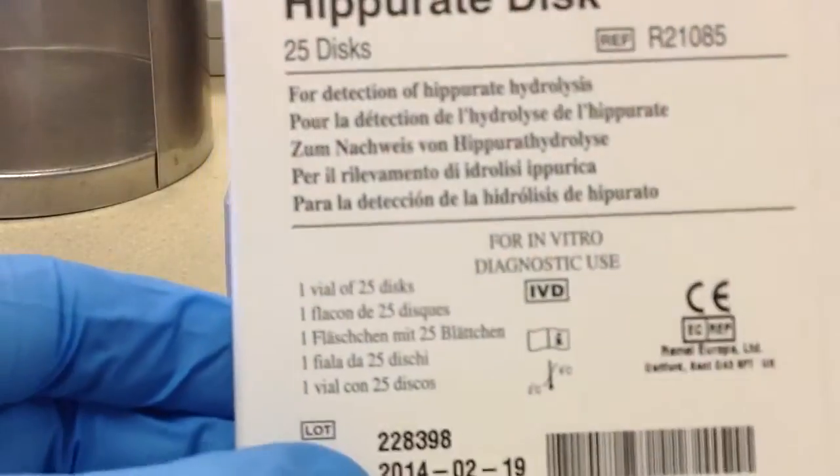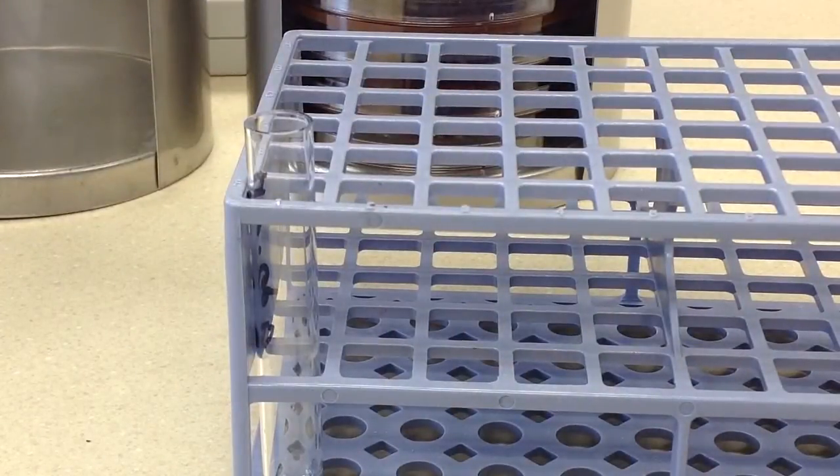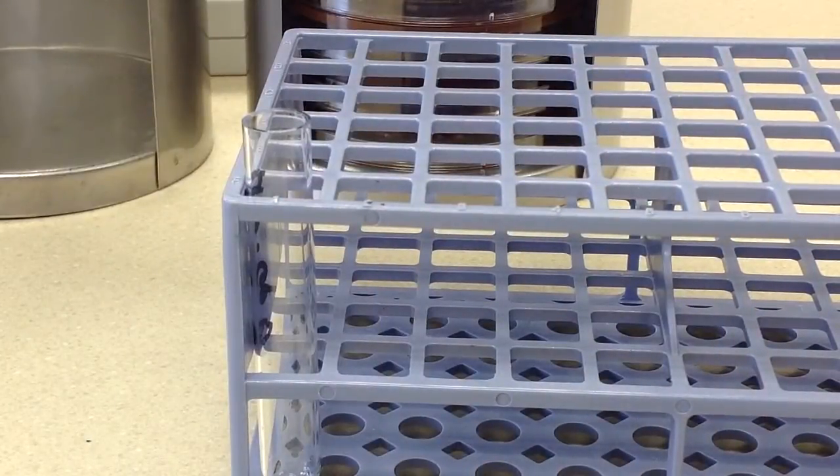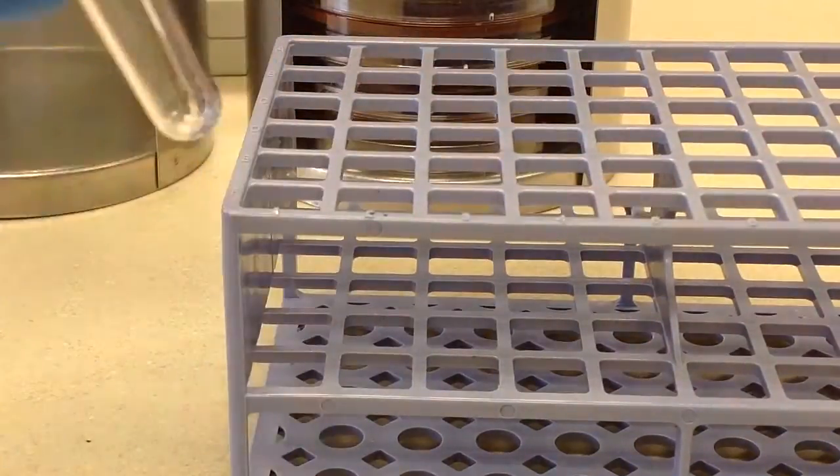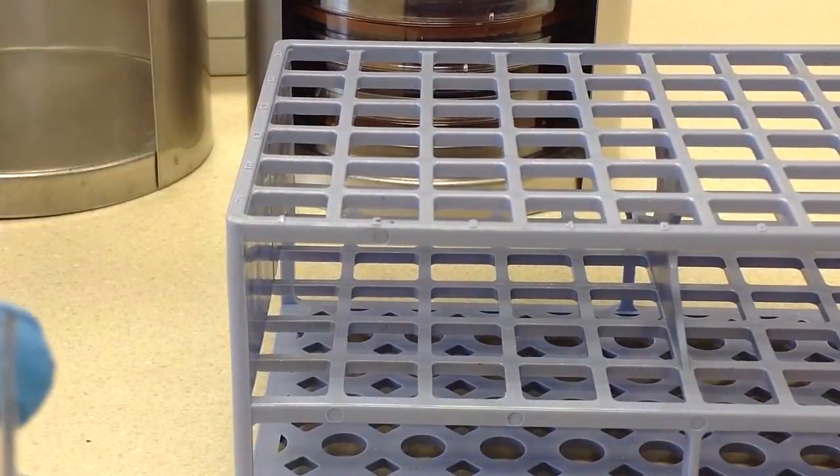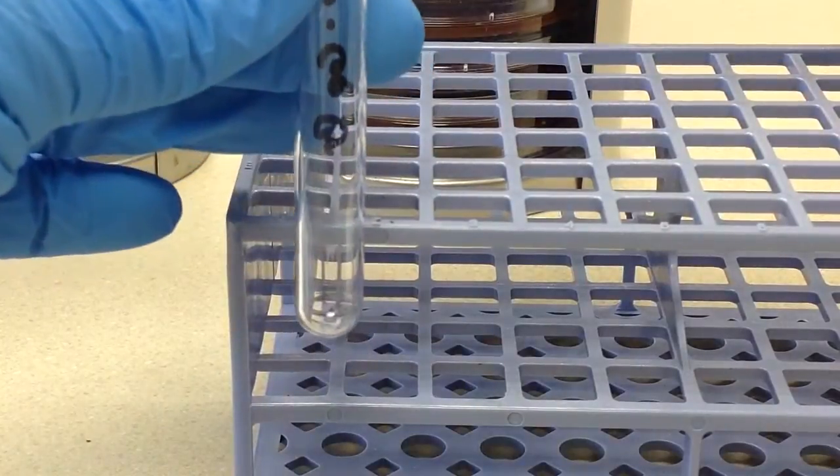We're going to be using the Remmel Hippurate disc, and we will eventually be adding the Remmel Ninhydrin Reagent. This procedure first calls for using a plastic test tube, and we're going to add 0.1 milliliters of DI water to it.